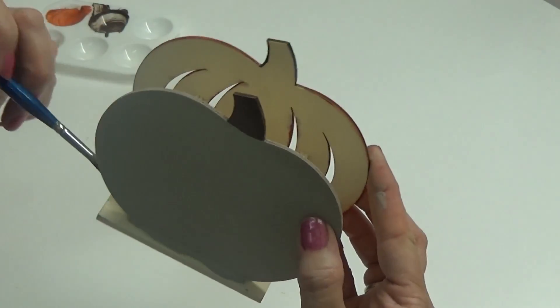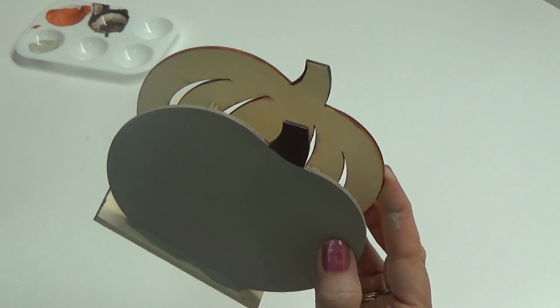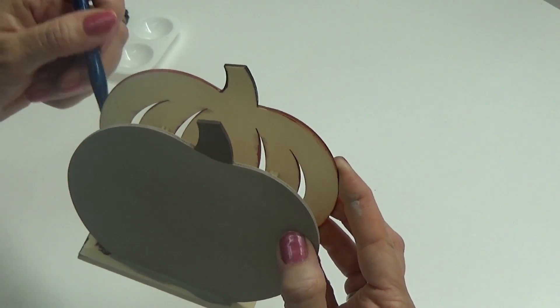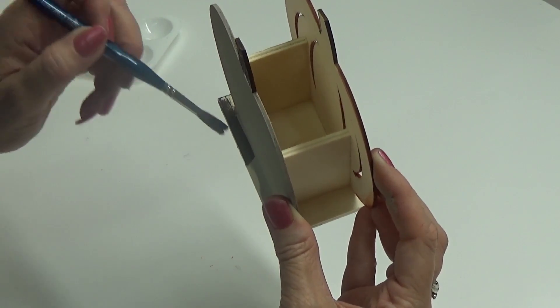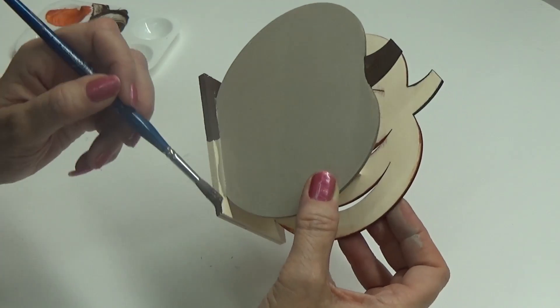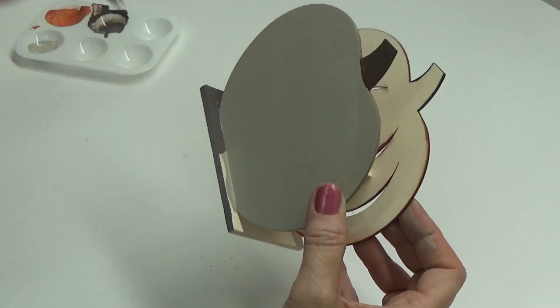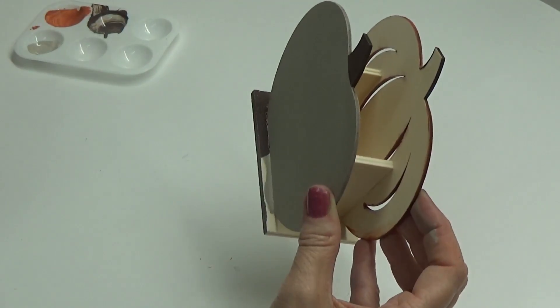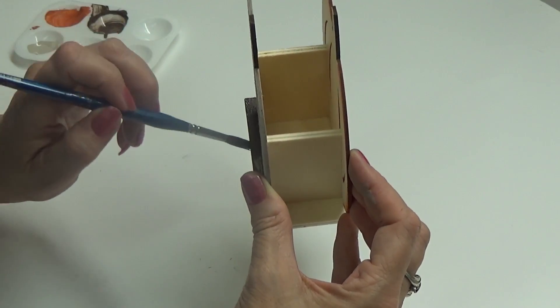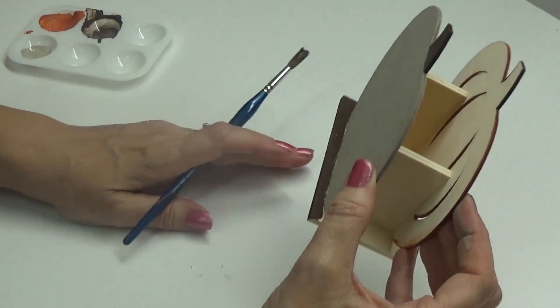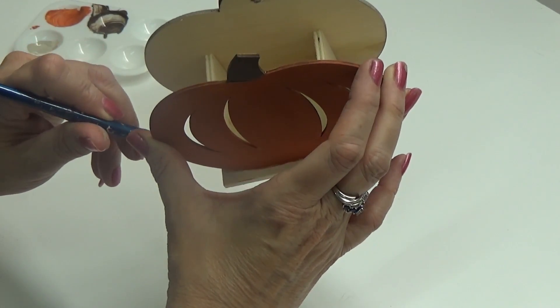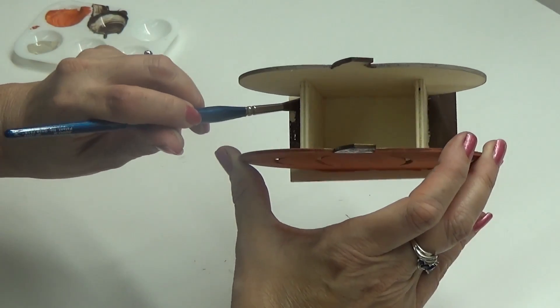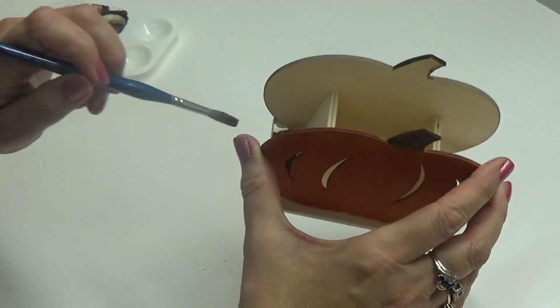Now I'm putting the brown on the base. Again, you don't have to paint the base if you don't want to, that's entirely up to you. You can just stain it because it is a little harder and a little trickier.